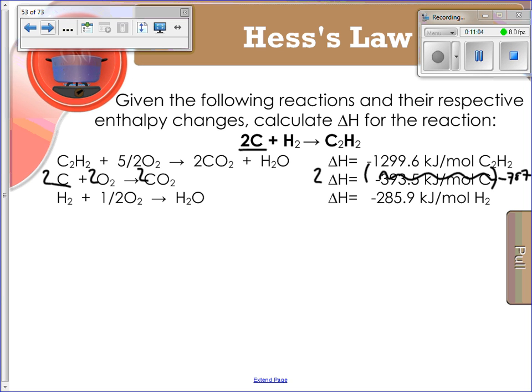Let's look at the H2. We've got H2 here and one H2 here. They're both reactants at the same factor. Check. Then we've got C2H2. I've got C2H2 in this subreaction, but it's on the wrong side. It's a reactant and I need it to be a product. So I'm going to flip it: 2CO2 plus H2O yields C2H2 plus 5 halves oxygen. That means this becomes positive 1299.6 kilojoules.